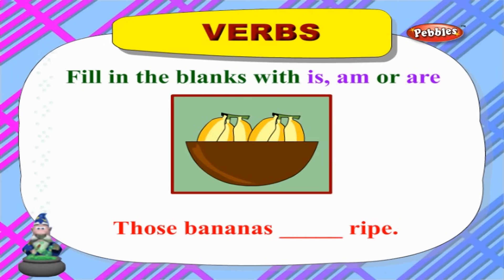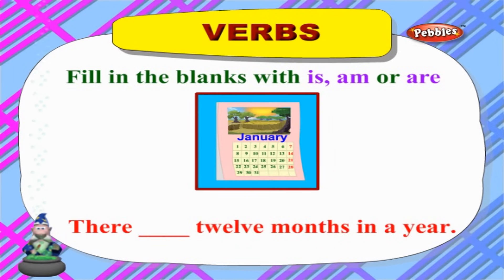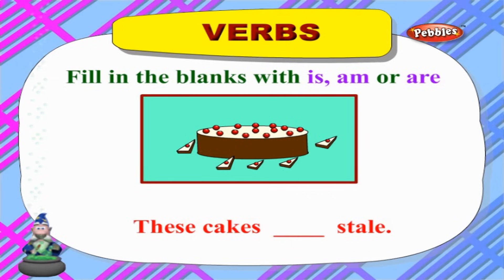'Those bananas ___ ripe' — 'Those bananas are ripe.' 'I ___ talking to my friend' — 'I am talking to my friend.' 'There ___ twelve months in a year' — 'There are twelve months in a year.' 'These cakes ___ stale' — 'These cakes are stale.'